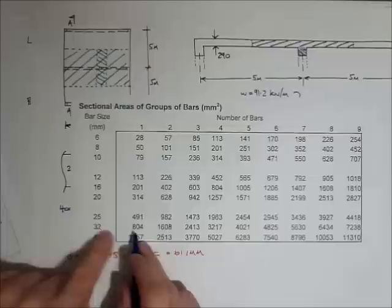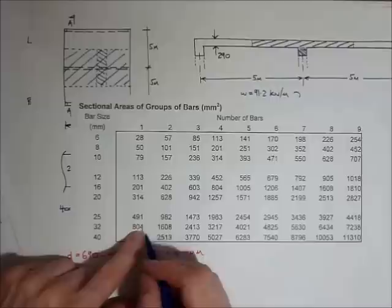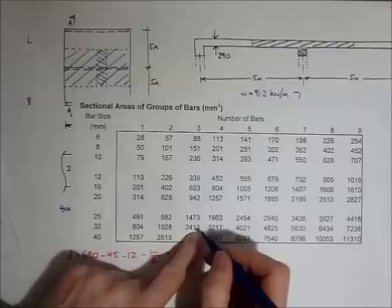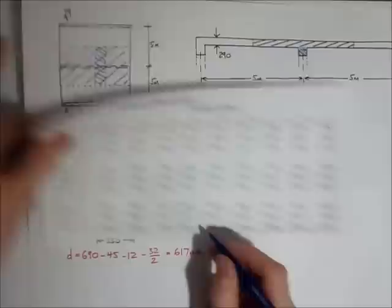So here are the bar sizes, here's the number of bars. So if I had 1, 32 mil diameter bar, it would give me 804 millimetres squared. So that's pi d squared, pi times 32 squared over 4. If I've got 2 bars, it would be 1608. 3 bars, it would give me 2,413. Bingo! That's what I'm going to take. 3 bars give me 2,413 millimetres squared.